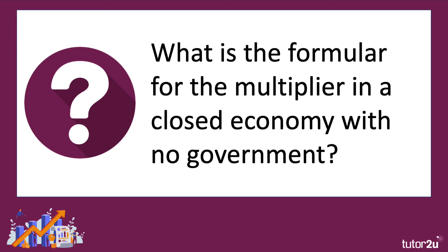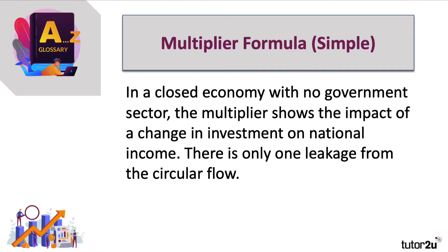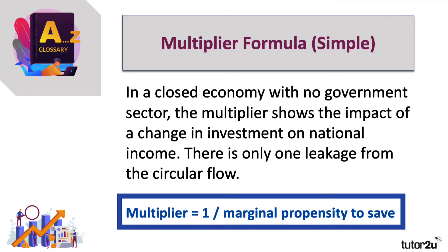What's the formula for the multiplier in a simple economy? That's a closed economy with no government. A closed economy means no trade; no government means we can ignore government spending and taxation. In a closed economy with no government, there is only one leakage from the circular flow, and that is saving — disposable income which people don't spend.